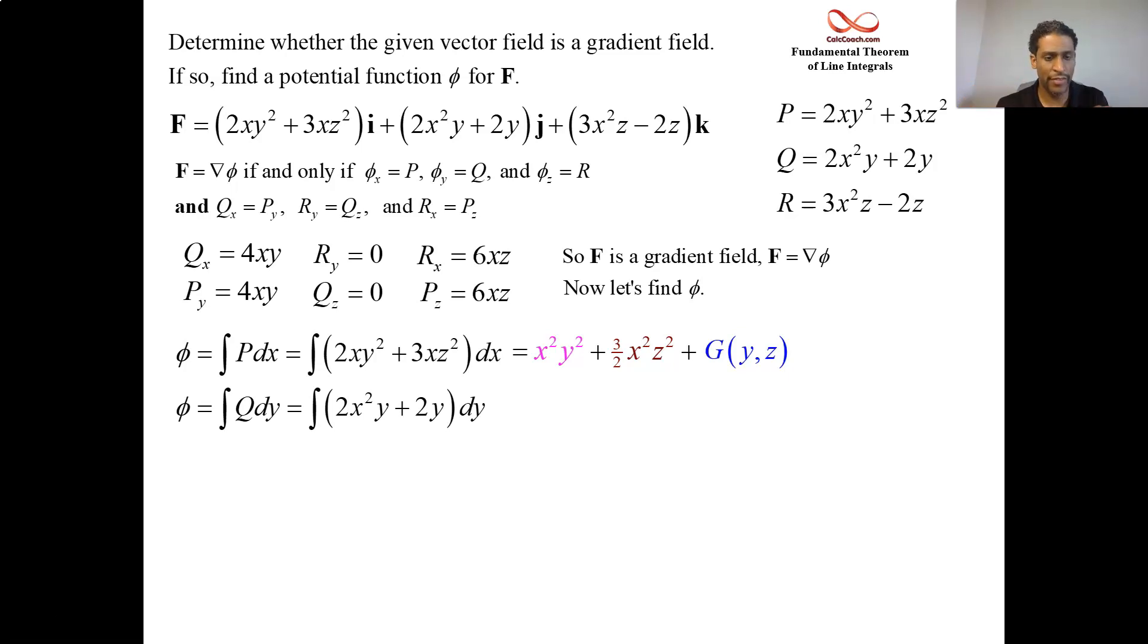So we add this g of y, z, the other variables, then you integrate q with respect to y. You'll get x squared y squared, but then you'll get y squared. And then, potentially, some function who could have some x's and z's in it, because when you take its y partial, that part doesn't contribute. I'm color coding these guys. And in the end, although they might be repeated, I'll only use each term once. Last step, integrate r with respect to z. So we'll get 3 halves x squared z squared minus z squared plus, potentially, some function who could have some x's and y's in it.